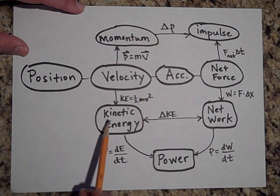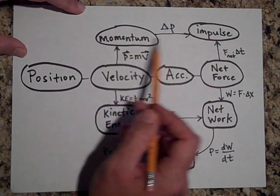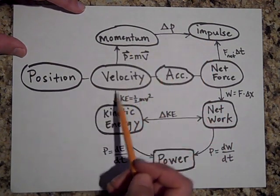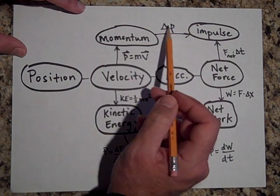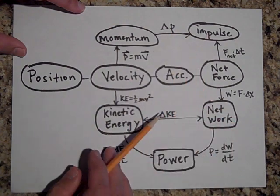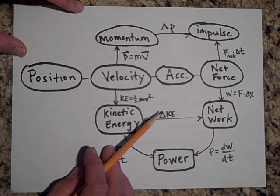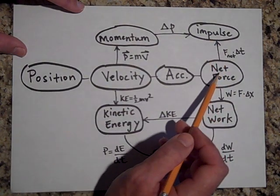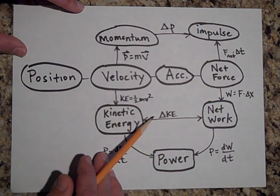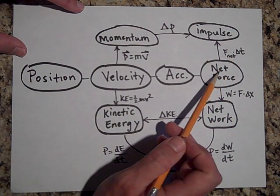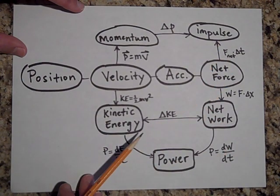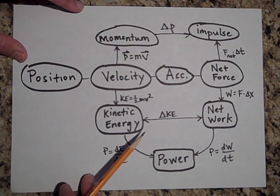From momentum I can get to impulse because impulse is just a change in momentum, so I just take the change in momentum and that gives me impulse. I can also get to impulse this way: impulse is F net times the time the net force acts over, so impulse is F net times the time it takes the force to act over it.